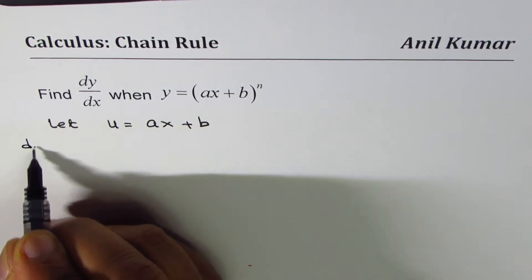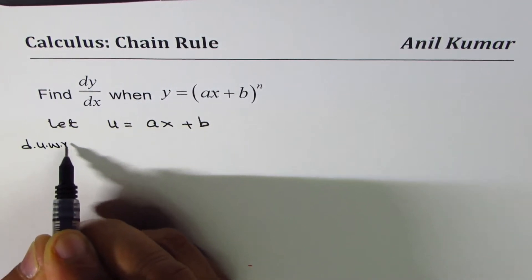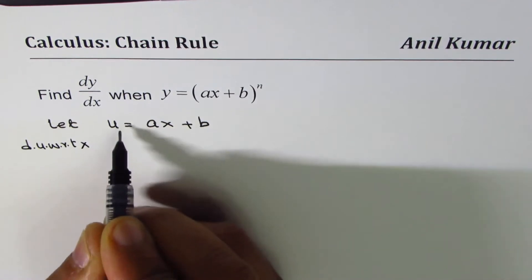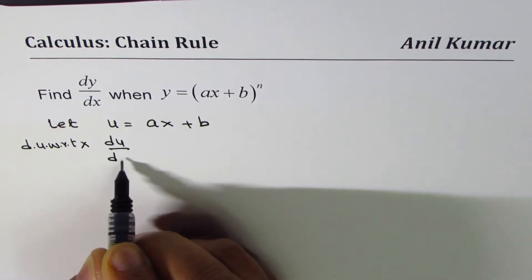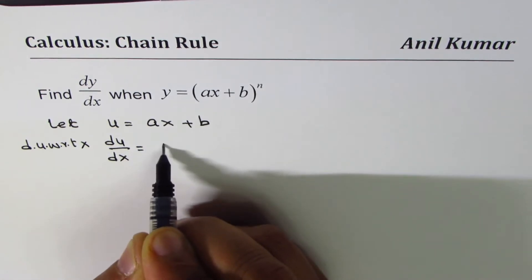Now we can differentiate u with respect to x. So if I differentiate u with respect to x, what do I get? I get du/dx equals to a.